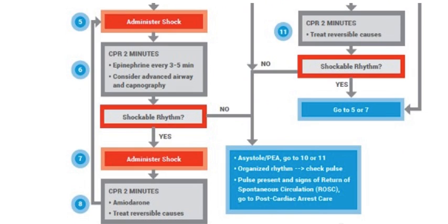If yes, administer shock, then immediately perform CPR for two minutes while administering epinephrine every three to five minutes. Consider placing an advanced airway and monitoring via capnography. Reassess for a shockable rhythm. If yes, administer shock, do CPR for two minutes, administer amiodarone, and treat reversible causes — H's and T's.